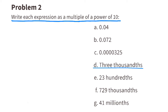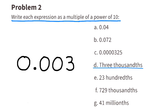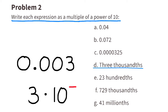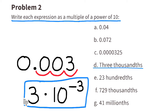D: three-thousandths. That's a decimal written with a three in the thousandths place. We can express this as a multiple of a power of ten by multiplying three times ten to a negative power, because we're representing a decimal. And since the decimal is three places to the left of the three, the exponent is a negative three.